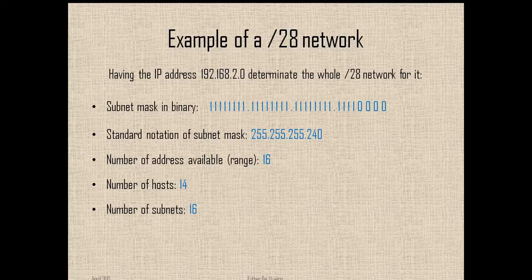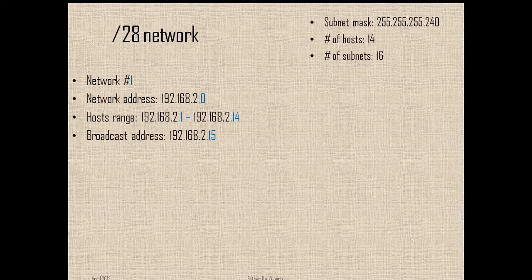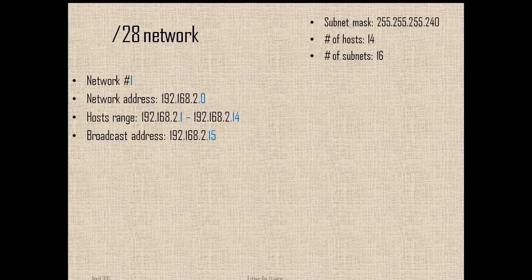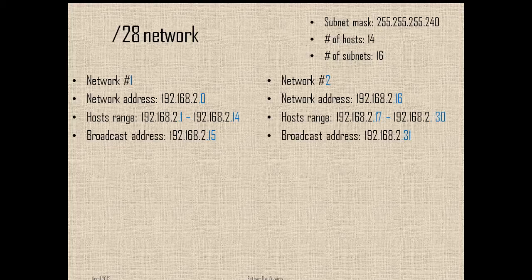If you don't know how to do these calculations, please check our first video where you have the step-by-step explanation of how to do it and also some exercises. Then with that information we can establish the IP address allocation for each network. In network number one it is going to start at 0 and end at 15. Network number two is going to be from 16 to 31, and you are going to do this until you end all the 16 subnets.